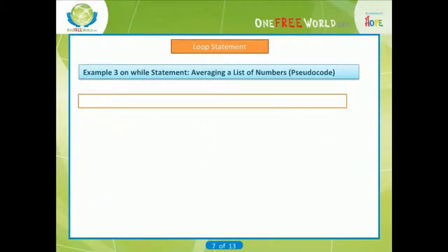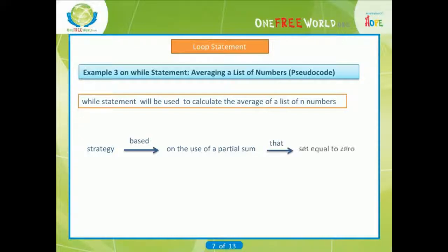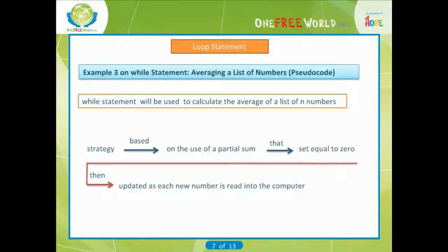Example 3 on while statement: averaging a list of numbers (pseudocode). Let us now use a while statement to calculate the average of a list of N numbers. Our strategy will be based on the use of a partial sum that is initially set equal to 0, then updated as each new number is read into the computer. Thus, the problem very naturally lends itself to the use of a while loop.